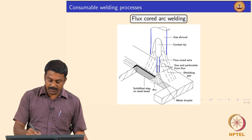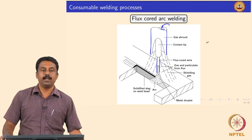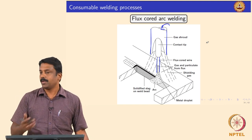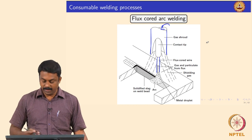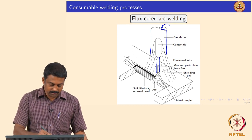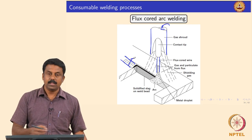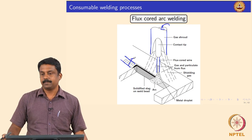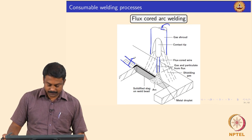Sometimes you also send in shielding gas, but if you are using a self-shielded FCAW you do not need shielding gas because the flux itself can generate the shielding gas. Then you have slag deposited on top of the weld pool and you can break it off after welding.